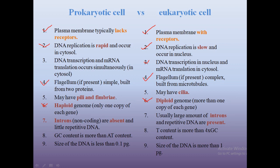In prokaryotic cells, the DNA does not have introns — introns are non-coding DNA sequences, while exons are coding DNA sequences. So prokaryotic cells have only exons and little repetitive DNA. In eukaryotic cells there are large amounts of introns and repetitive DNA present, so eukaryotic DNA contains both exons and introns. In prokaryotic cells the GC content — guanine and cytosine — is very high relative to the AT content.